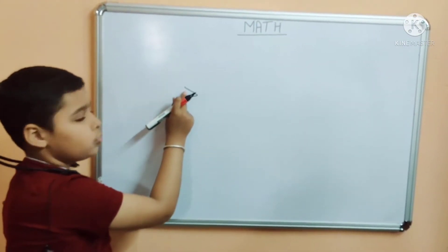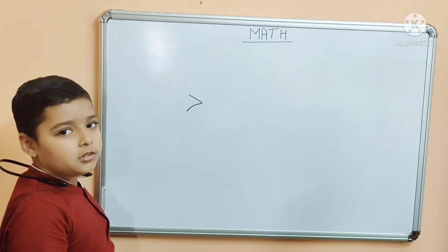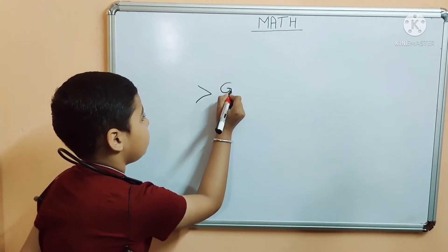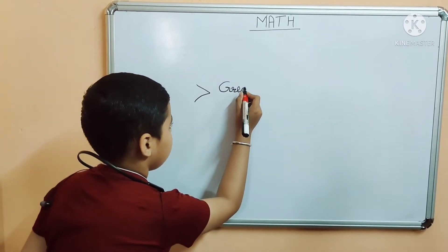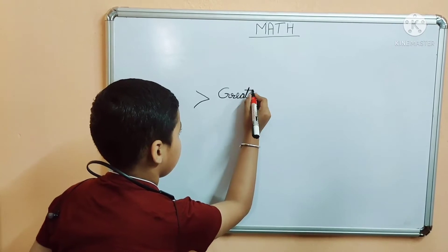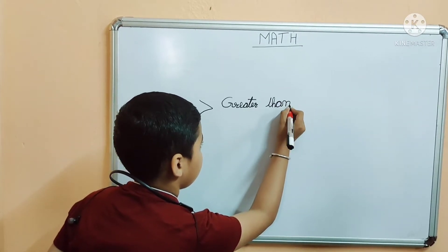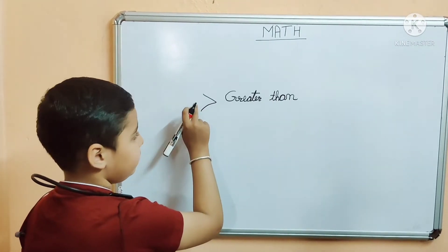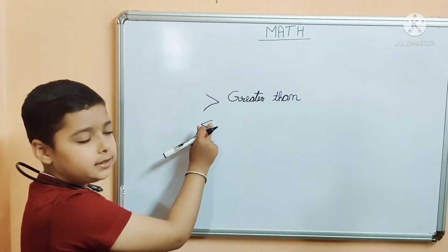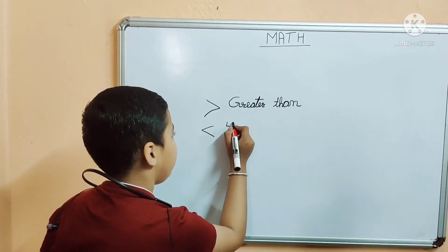If the mark is open at the left side and closed at the right side, it is called the greater than symbol. If the mark is open at the right side and closed at the left side, it is called the less than symbol.